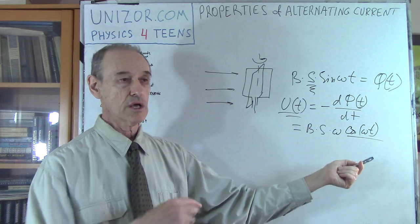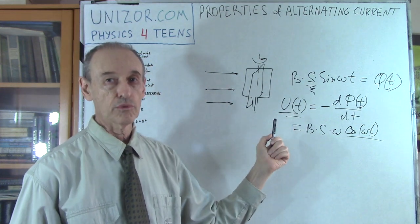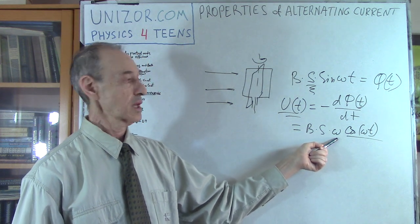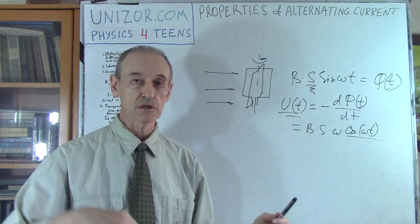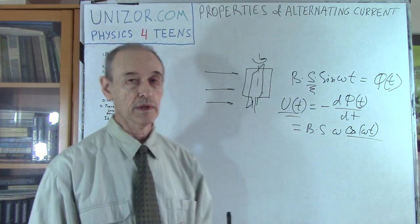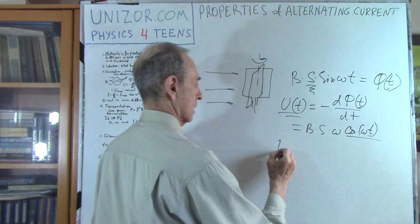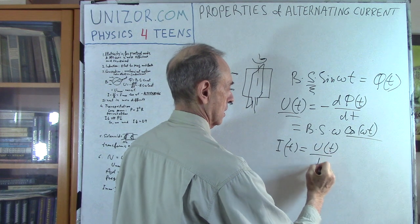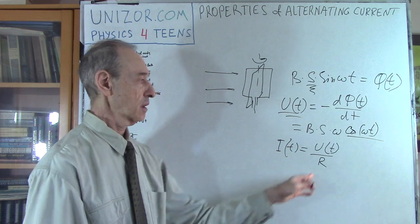Alternating current is a cosine — or sine — so you have a sinusoidal graph of voltage produced. It has a certain maximum equal to B times S times ω, and the minimum is minus B·S·ω, pulsating between U_max and minus U_max in a sinusoidal way. Since we have Ohm's law, the shape of the electric current will be exactly the same — variable and sinusoidal.